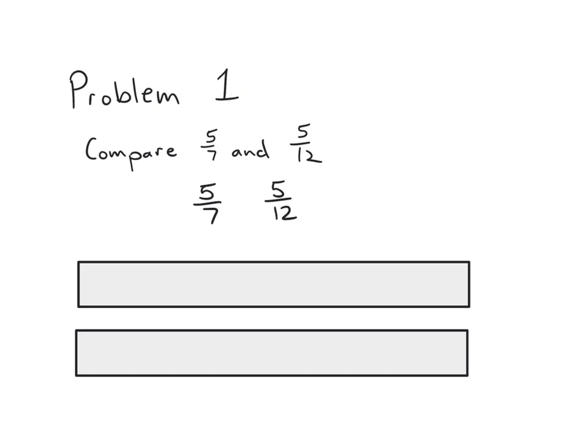Right off the bat, we can see that sevenths are larger than twelfths, because twelfths are cut into twelve equal pieces, which are pretty small. Since there are five of both, five-sevenths is greater than five-twelfths. On the top tape diagram, I'm going to partition into sevenths — one, two, three, four, five, six, seven.